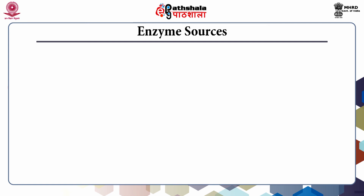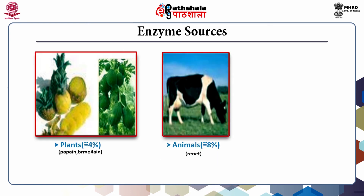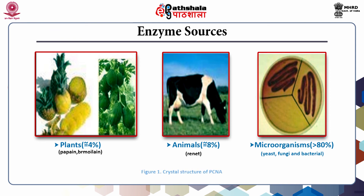Enzymes have contributed greatly to traditional and modern industrial processes, with applications in research and development, food and feed industry, pharmaceutical industry, and other industries like detergent, textile, and leather. Biologically active enzymes can be extracted from any living organism. There are three major sources: plants, animals, and microorganisms. Microbial sources contribute about 80% of overall enzyme production, with over half of industrial microbial enzymes sourced from fungi and yeast, and one-third from bacteria.